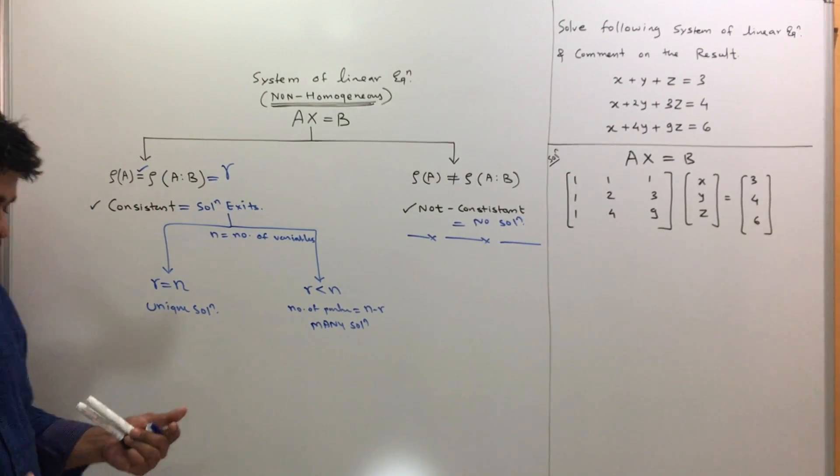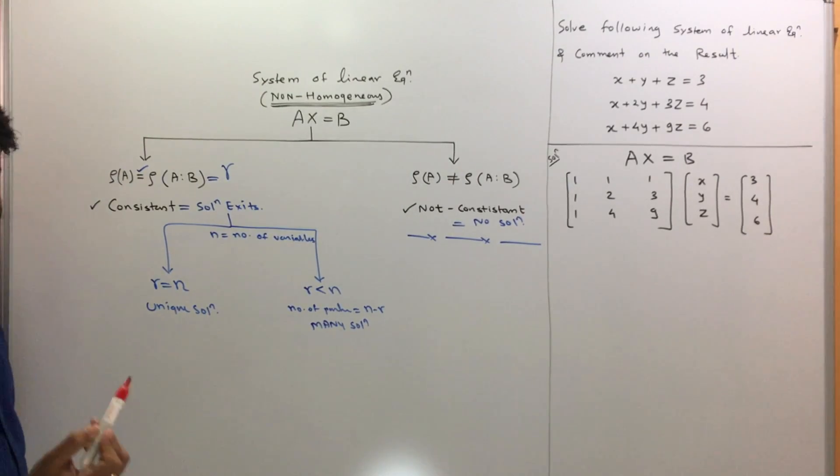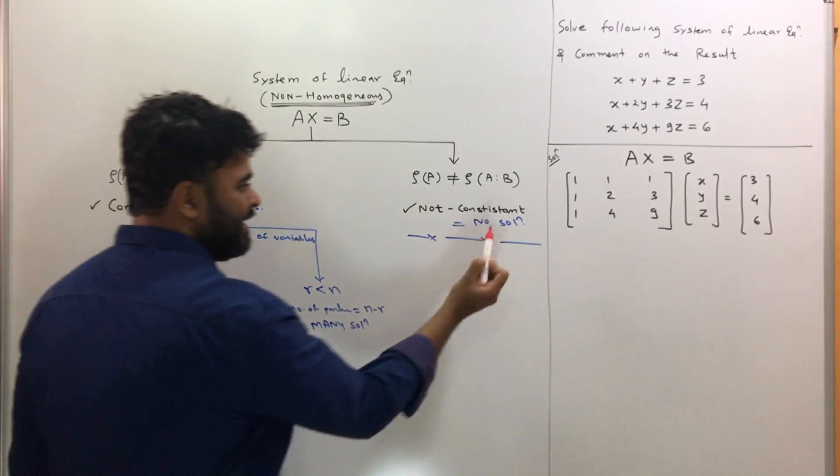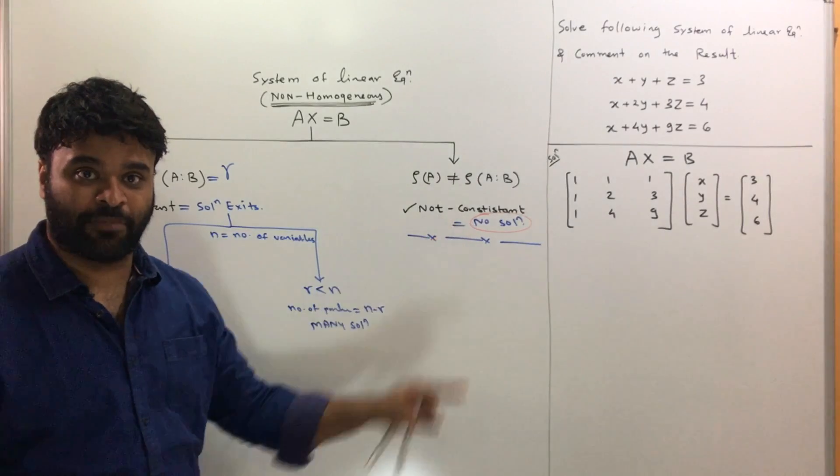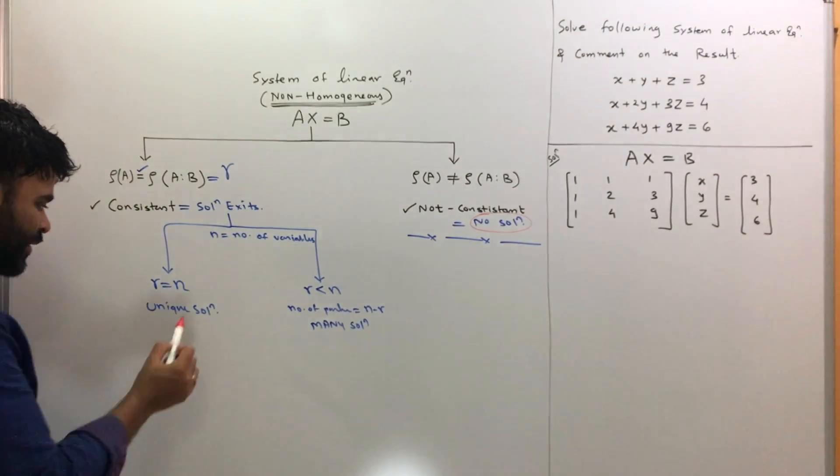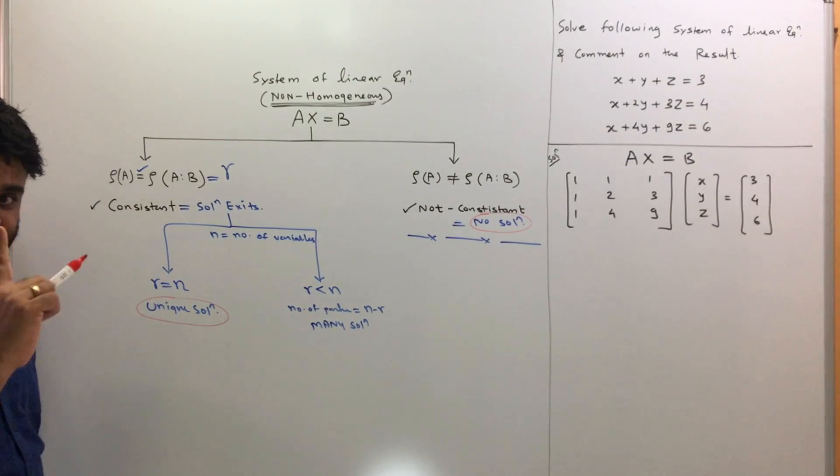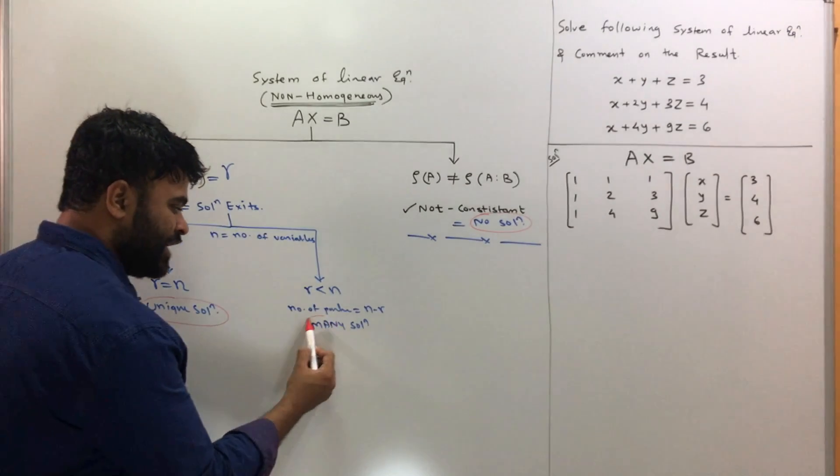Depending on the rank of matrix A and B, you can have three distinct cases. The first case is when rank of A and rank of A colon B is not equal—you get no solution. If R and n are equal, then you get a unique solution. If R is less than n, then you will have multiple solutions.